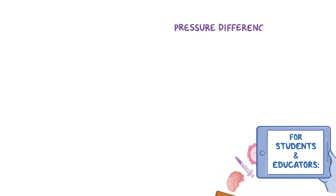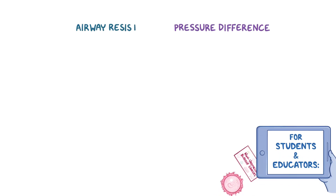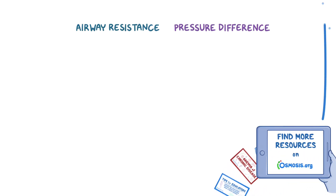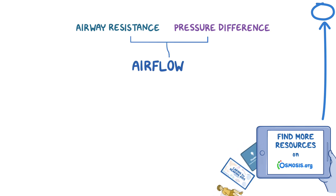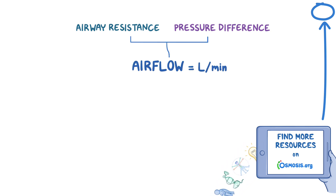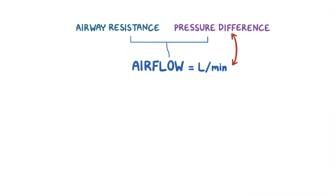Pressure difference and airway resistance determine how much air flows through an airway in a period of time, which is known as airflow. Airflow can be measured in liters per minute. The relationship between airflow and pressure difference is directly proportional, which can be represented as airflow, or Q, directly proportional — shown by a stretched-out Greek letter alpha — to delta P, which is the pressure difference.